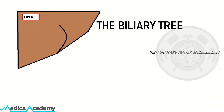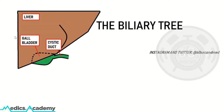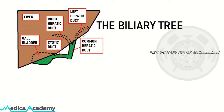The biliary tree starts with bile being produced by hepatocytes in the liver. The bile can be stored in the gallbladder, which drains into the cystic ducts, or the liver can directly secrete bile via the left or right hepatic ducts, which unite to form the common hepatic duct.